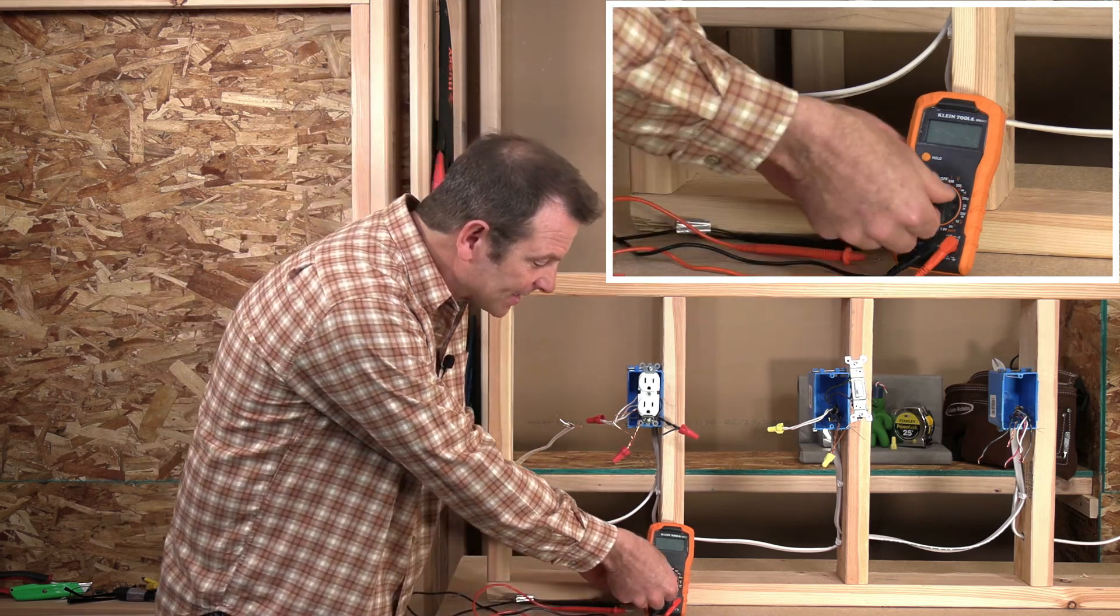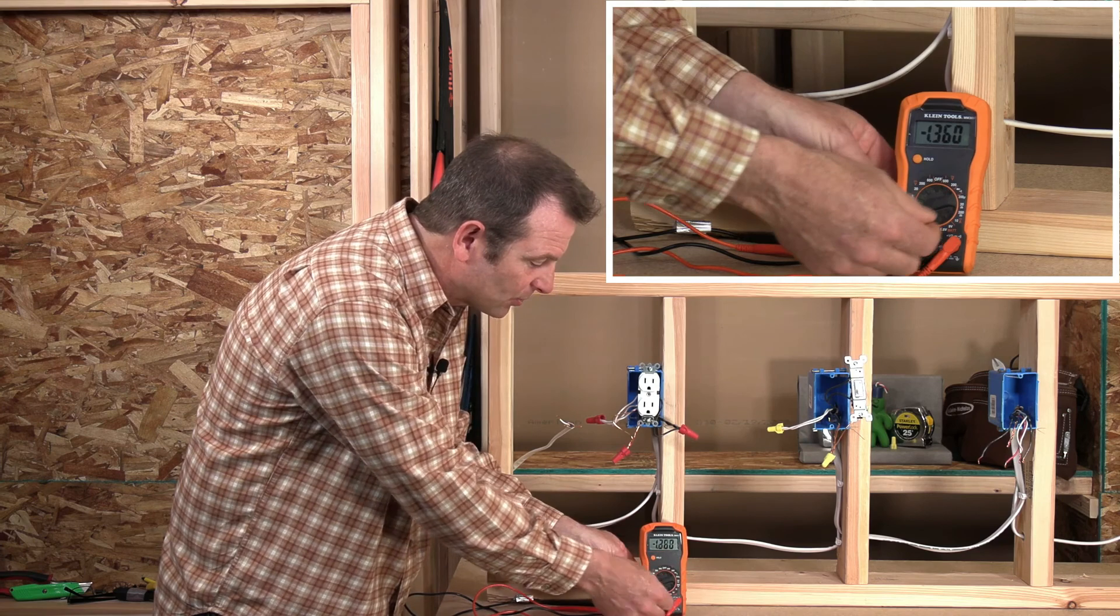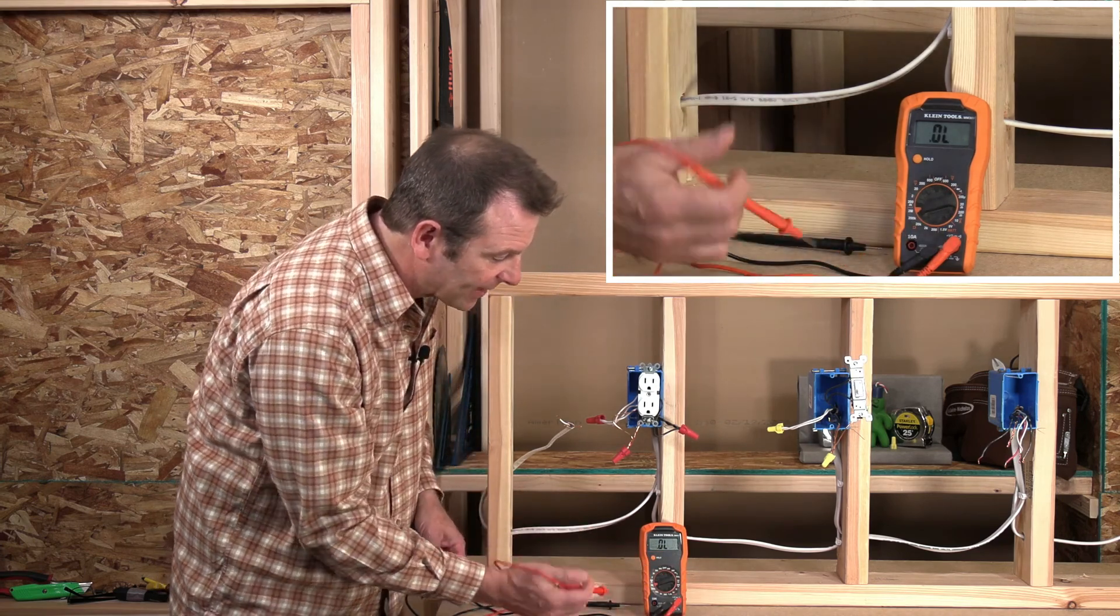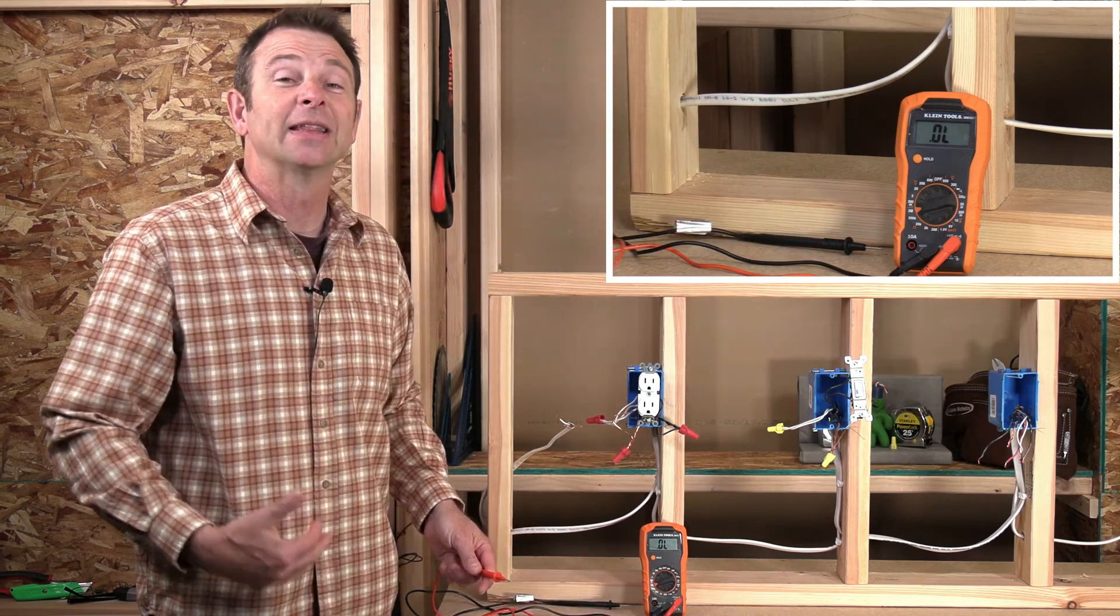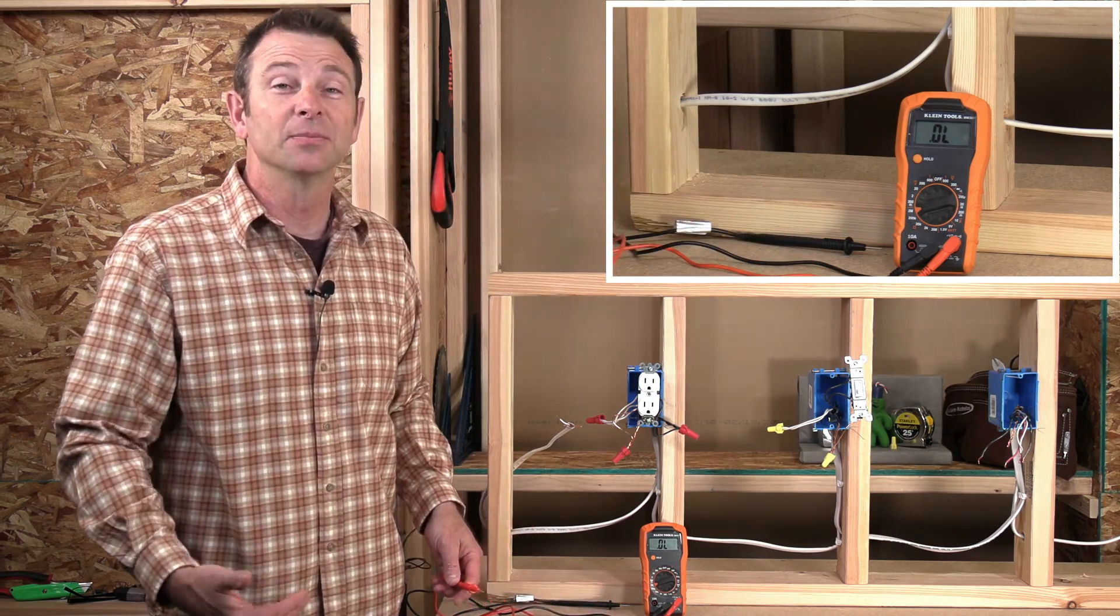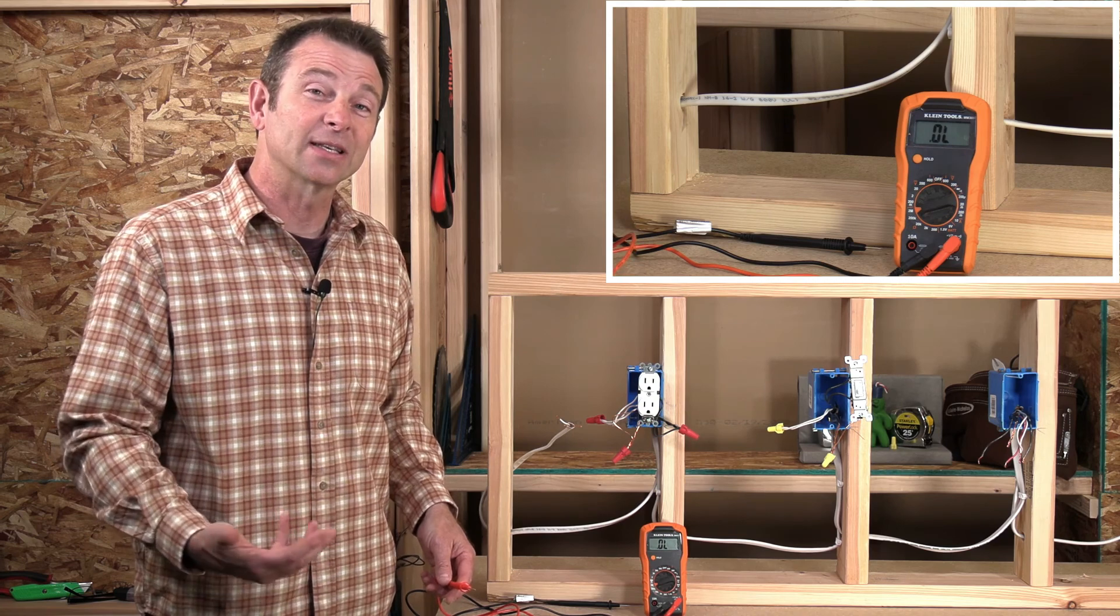You are going to set this to resistance and resistance is going to have a symbol that looks like an omega. That's a Greek symbol that stands for ohms. Ohms are going to be our units of resistance.